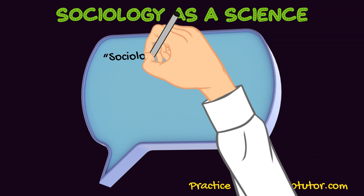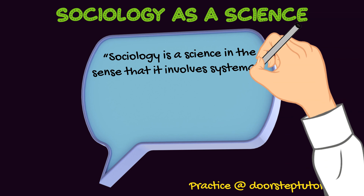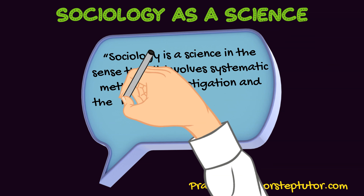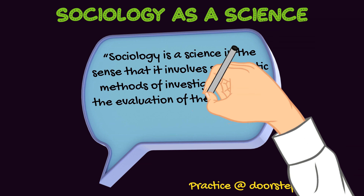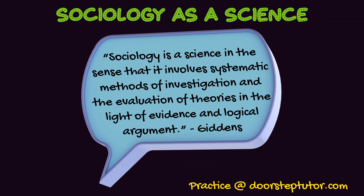There is a definition by Giddens: sociology is a science in the sense that it involves systematic methods of investigation. We cannot go out of the line; we have to have a theoretical framework, and these theories can be evaluated — they are backed by evidence and logical argument.